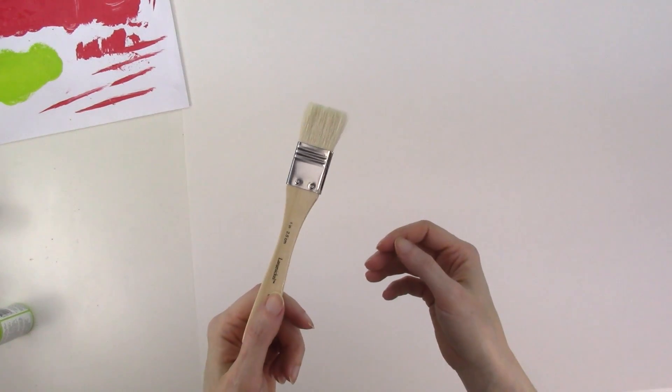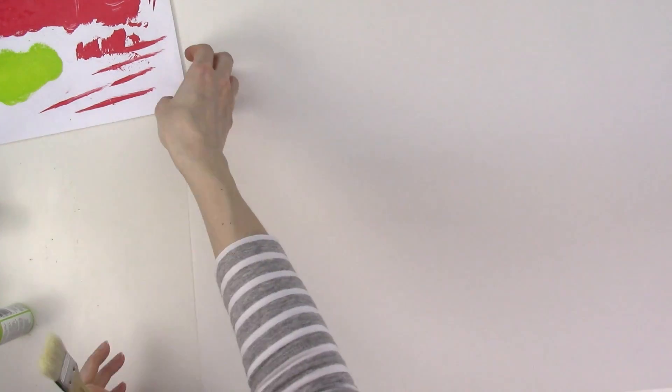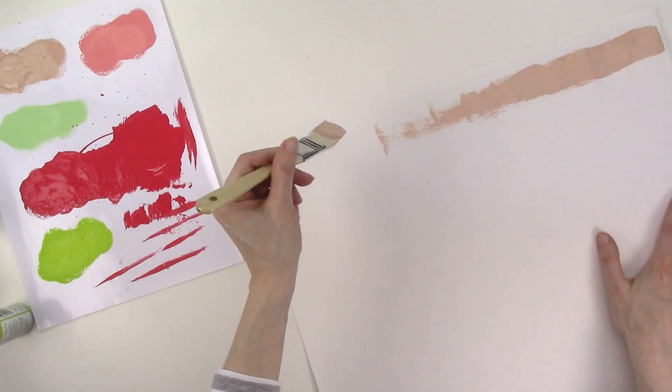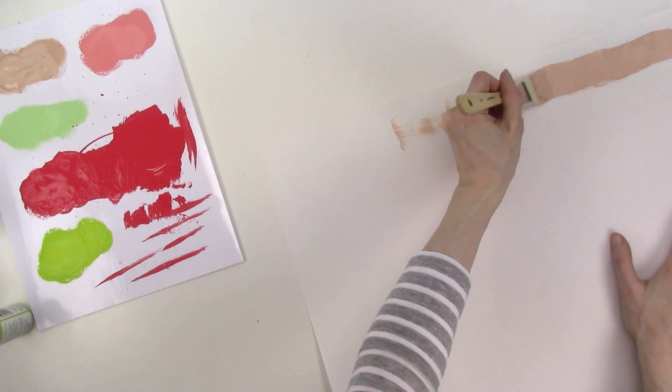For this design, I'll be using the 1 inch brush from the brush set, and I want to orient my paper vertically this time around because I'm going to be making stripes. I'll add some of the first color of paint to the palette paper, and then I'll load the brush and start painting.